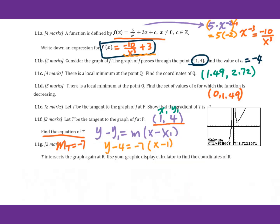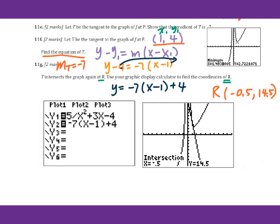For 11g, t intersects the graph again at point R. We're looking for R — we're looking for intersections. So we put y1 and y2. Remember, you cross the negative 4 to the other side, get y equals 4. Then find the intersection — that is R.